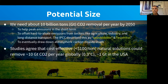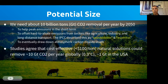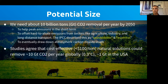The United States is particularly well positioned, with about 10 percent of the global natural climate solution potential. The US could achieve close to 1 gigaton of CO₂ removal per year, thanks to our large land area and extensive forests.